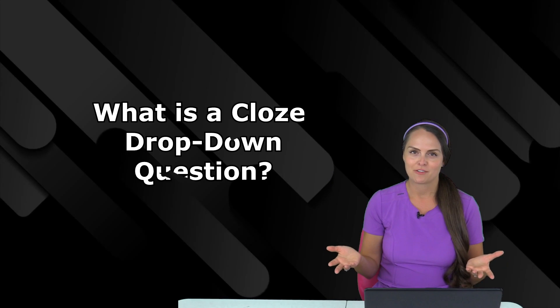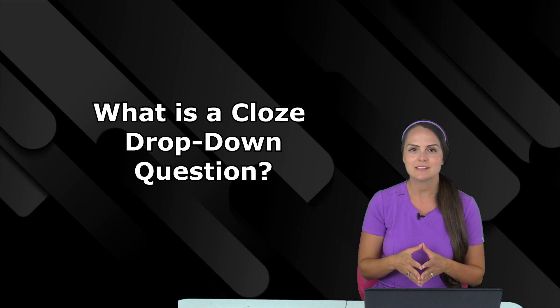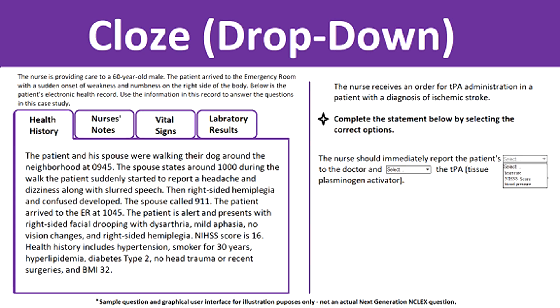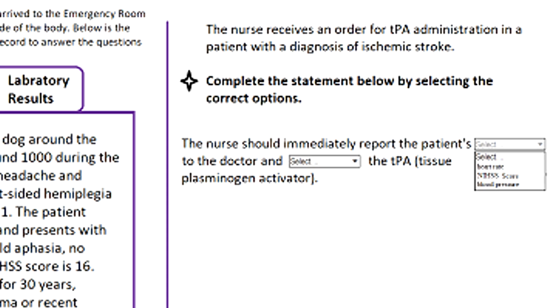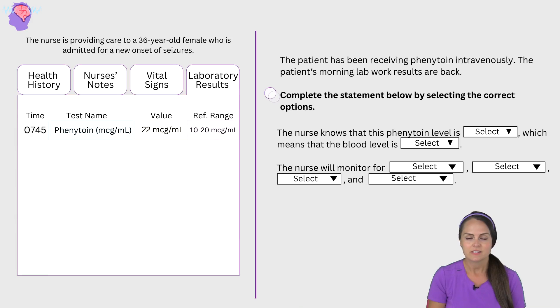What is a drop-down closed question? This is different from your typical multiple choice or select all that apply questions, because with this you're going to be given information from a scenario and you have to fill in the blank with the information provided in a drop-down box. There can be multiple drop-down boxes in a question or there could just be one. Let's go over a sample one and I'm going to walk you through how to answer it.